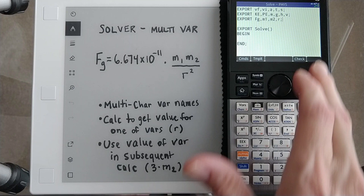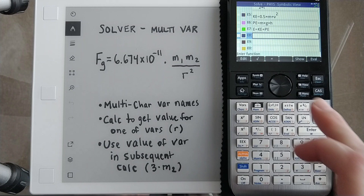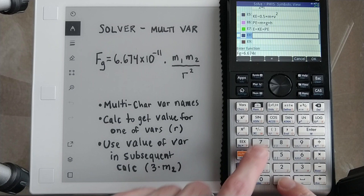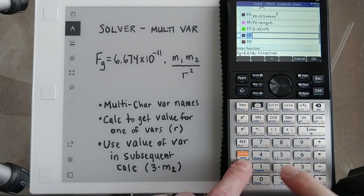So I can leave now. And now when I go back to the solver, I can, it won't have any problem with that. Or it shouldn't. So f of g equal 6.674 times 10 to the negative 11 times lowercase m1 times lowercase m2 divided by lowercase r.